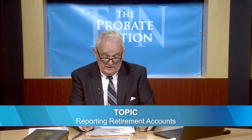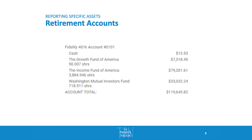For retirement accounts, it's going to be very similar to brokerage accounts. Just make sure you indicate what type of account it is — whether it's an IRA or anything of that sort. List the name of the firm and who the account is with, and then subsequently list all of the holdings within that account, the number of shares, the price per share, and the total value of each holding.